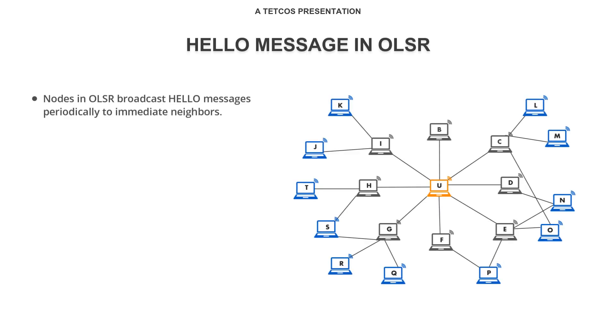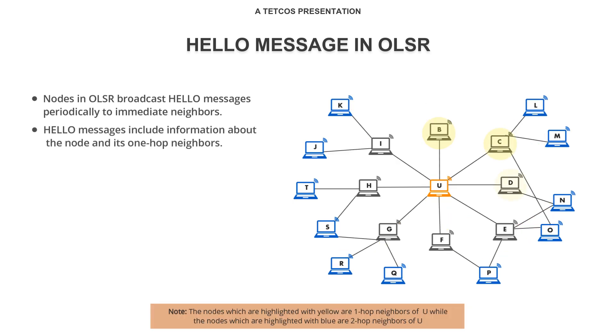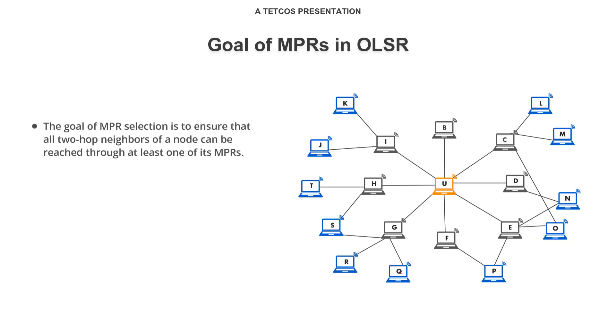Each node in an OLSR network periodically broadcasts hello messages to its immediate neighbors. These messages contain information about the node itself and its direct neighbors, that is one-hop neighbors, and are used to identify one-hop and two-hop neighbors. The goal of MPR selection is to ensure that all two-hop neighbors of a node can be reached through at least one of its MPRs.